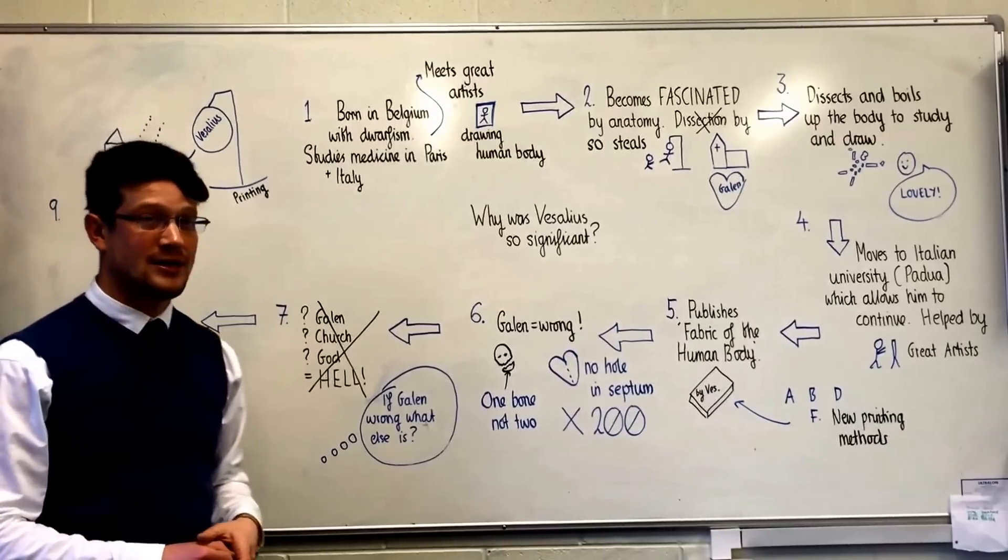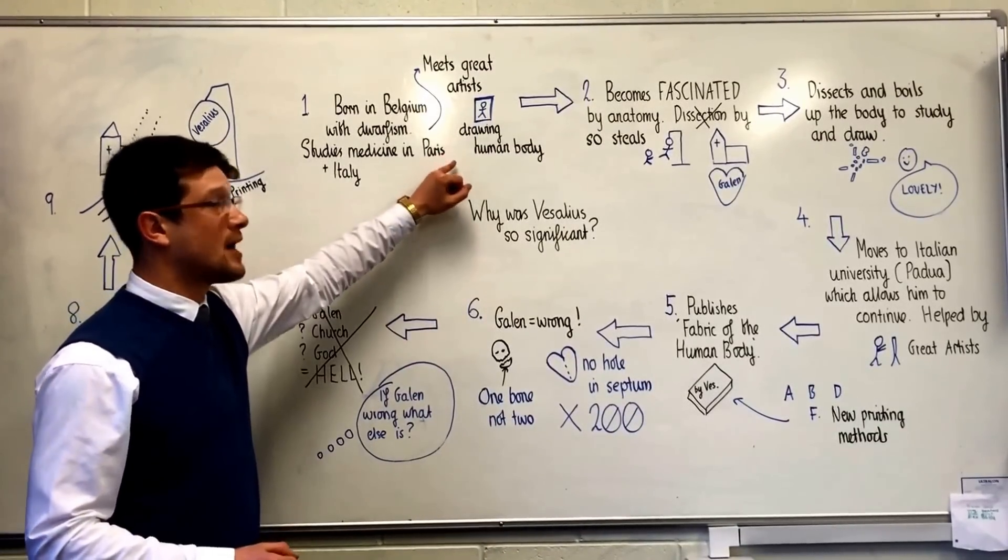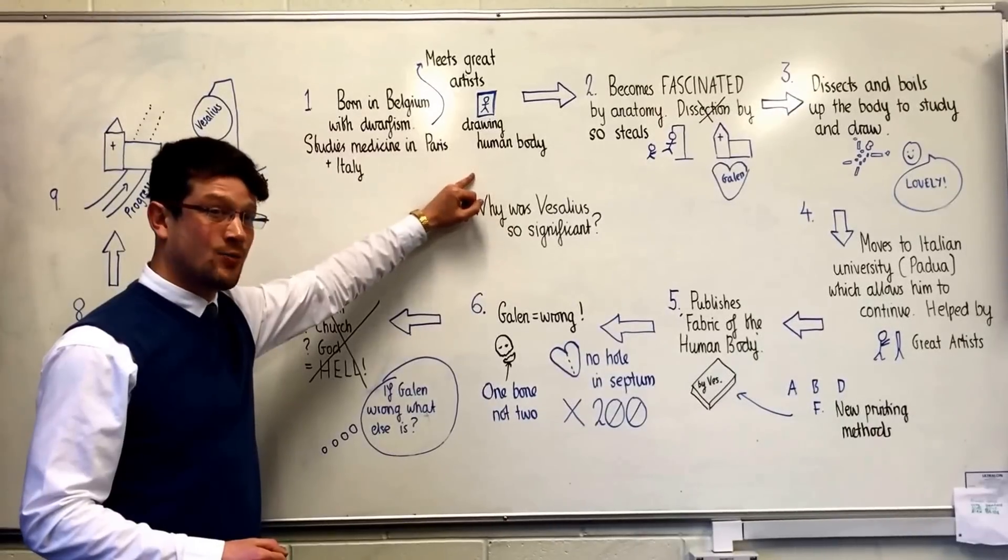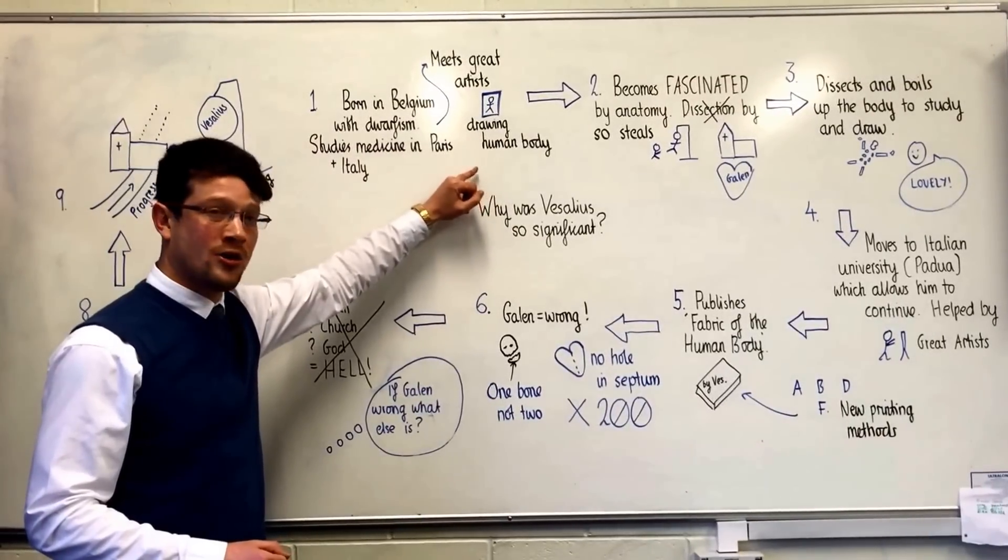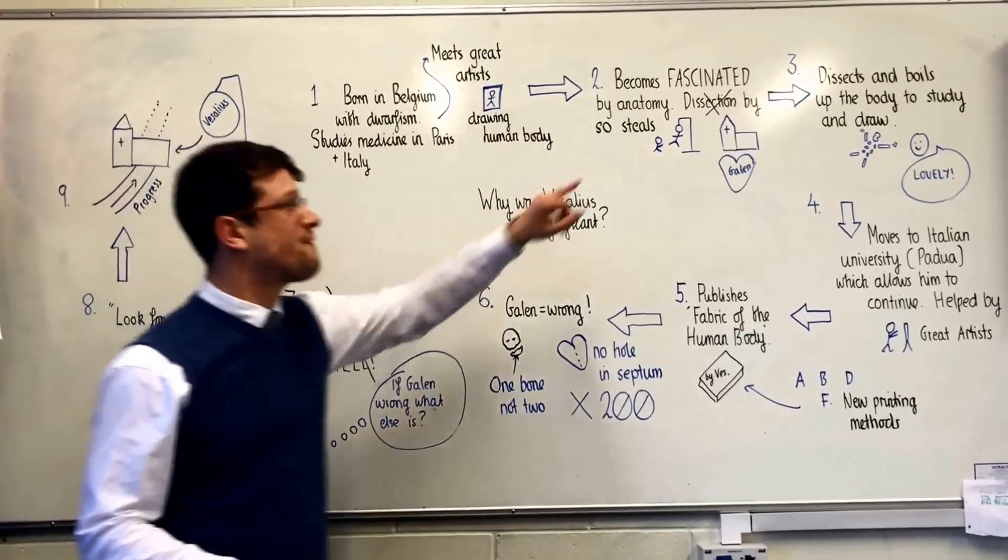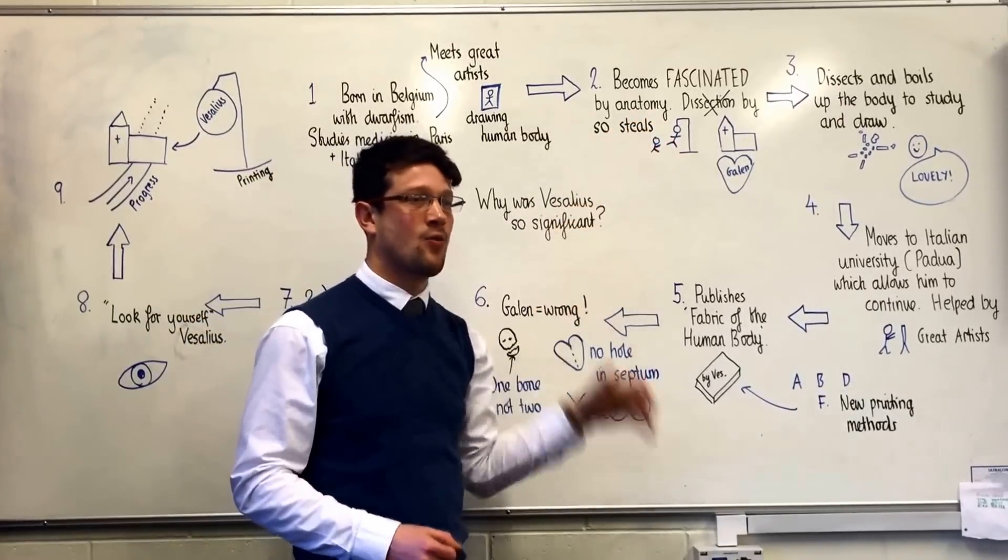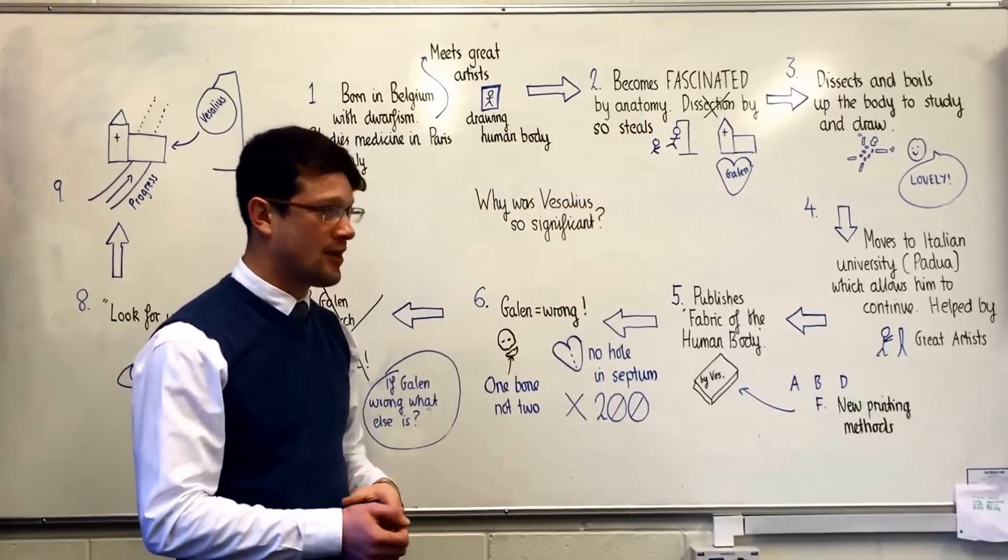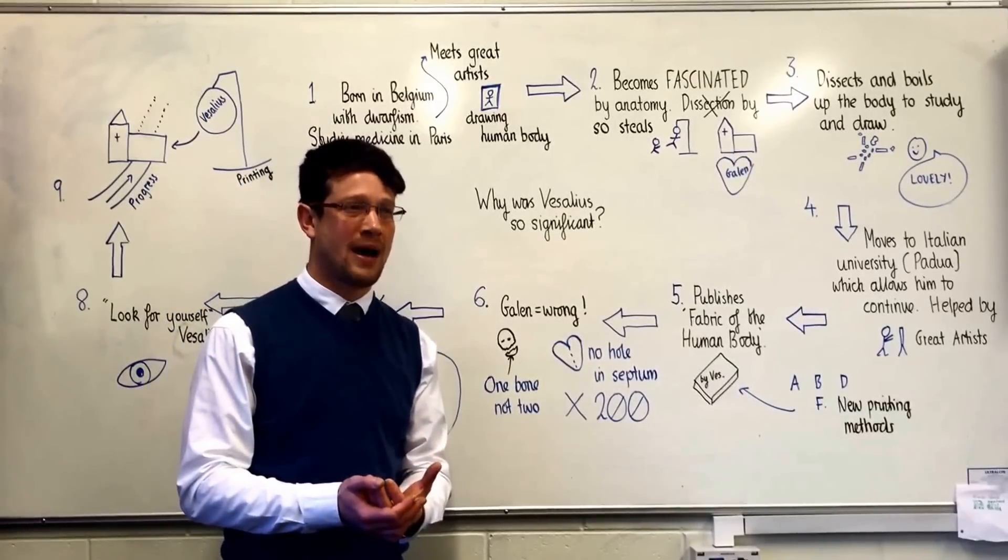It was in Paris that he got the opportunity to meet great artists and those artists were dissecting human bodies in order to be able to draw them better. Now this gets Vesalius fascinated by anatomy, by the way the human body fits together and he wants to learn more about this too.